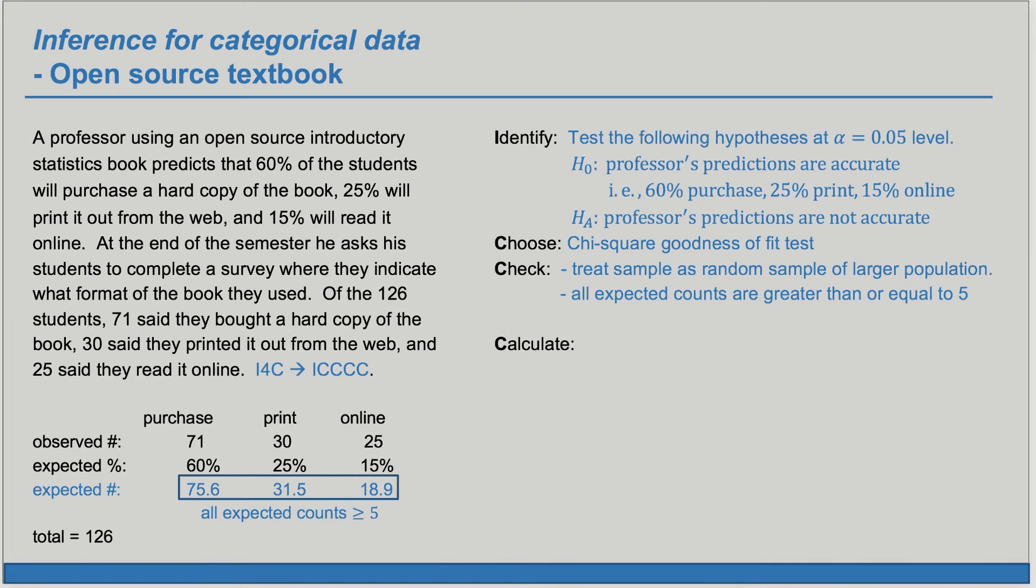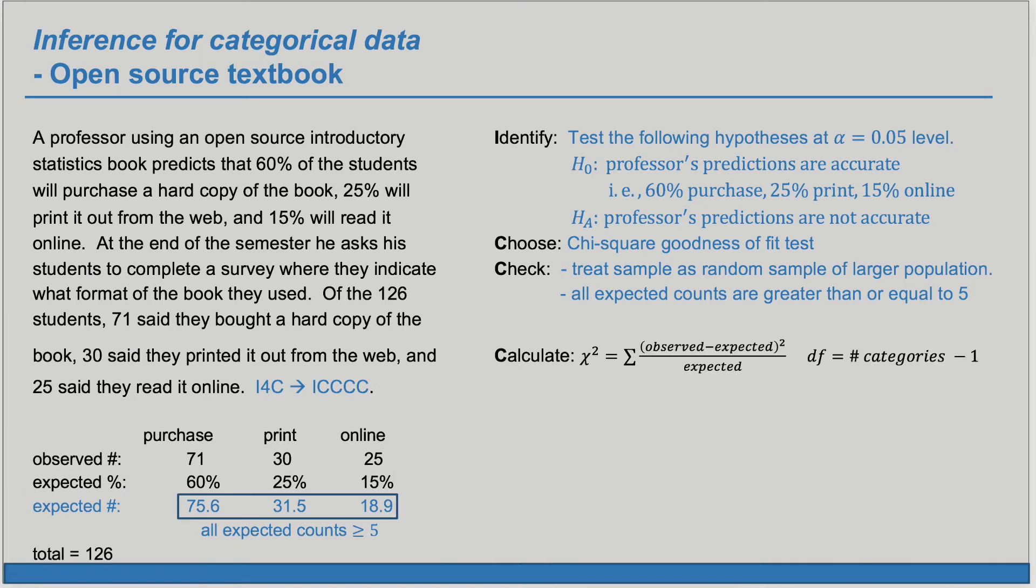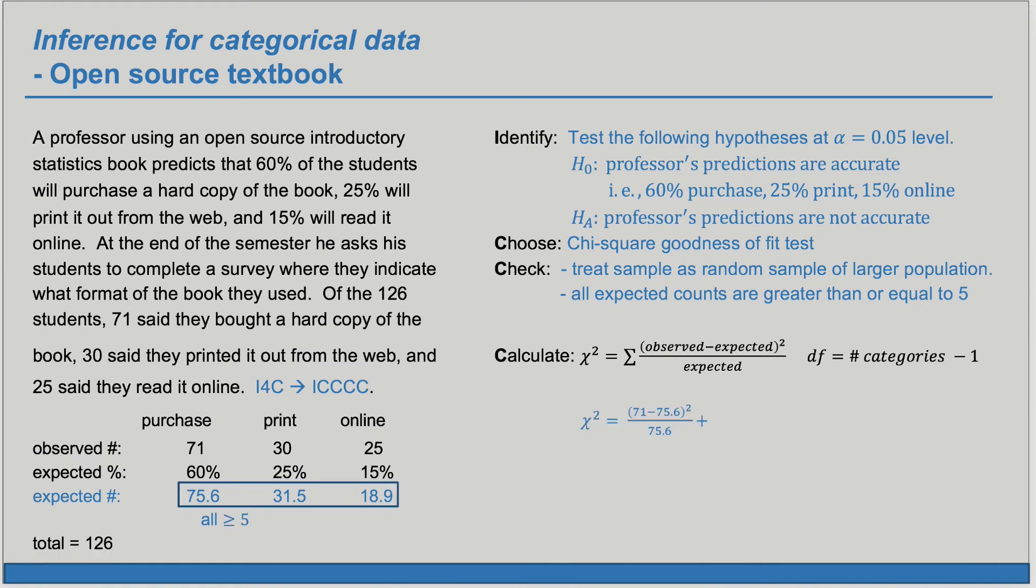Now we're ready to calculate. We'll calculate the chi-squared statistic shown here. So there'll be three terms in our sum. The first one we'll look at the observed number in the purchase group that's 71 minus the expected number of 75.6 quantity squared divided by the expected number of 75.6. Notice that when calculating chi-squared we always use the observed and expected numbers not the percents. So we'll do this for the next two groups as well and that sum will give us our chi-squared statistic. The degrees of freedom is the number of categories minus one. Here we have three categories purchase print and online. So our degrees of freedom will be two.